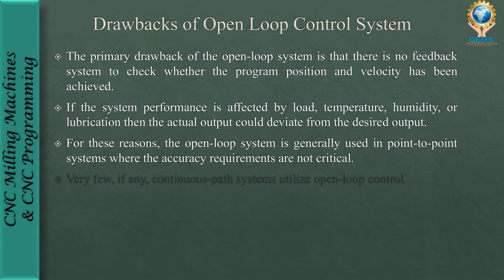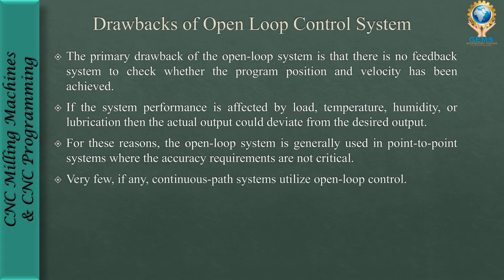For these reasons, the open loop system is generally used in point-to-point systems where accuracy requirements are not critical. They are used in applications where only point-to-point contact is needed and high accuracy is not important. Very few, if any, continuous path systems utilize open loop control.